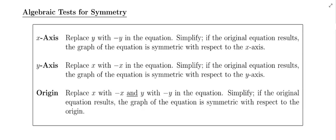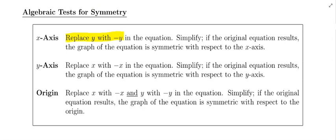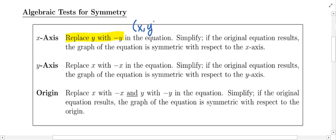Say you take your equation and you want to test it for x-axis symmetry. You are going to replace y with -y in the equation. Why are we doing that? Well, we know for x-axis symmetry if you start with any point, that point is going to get sent to the point where y has changed sign but x has stayed the same.